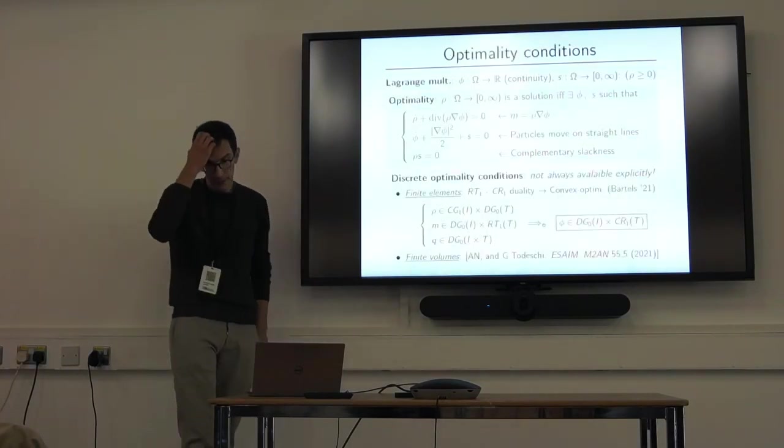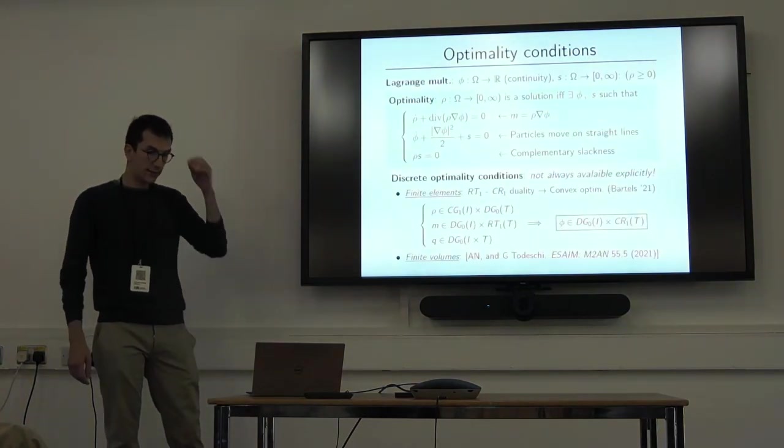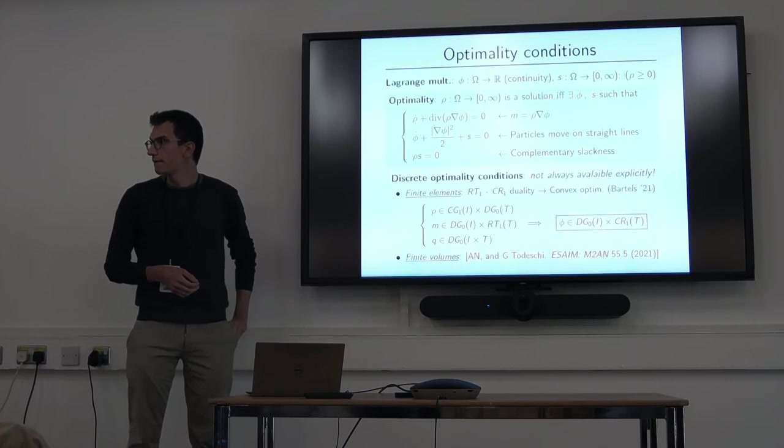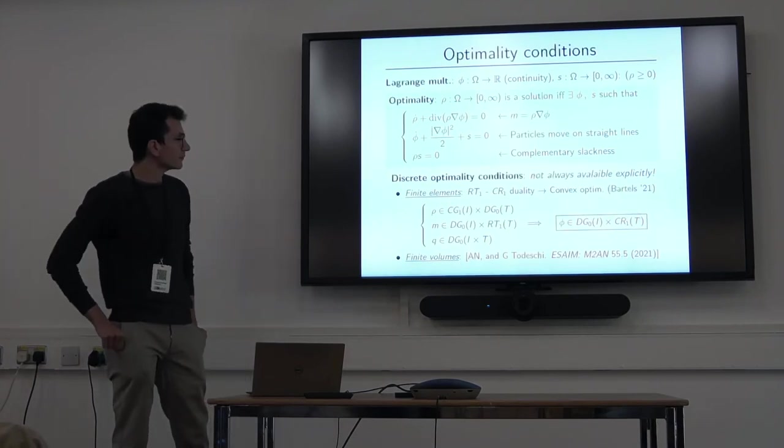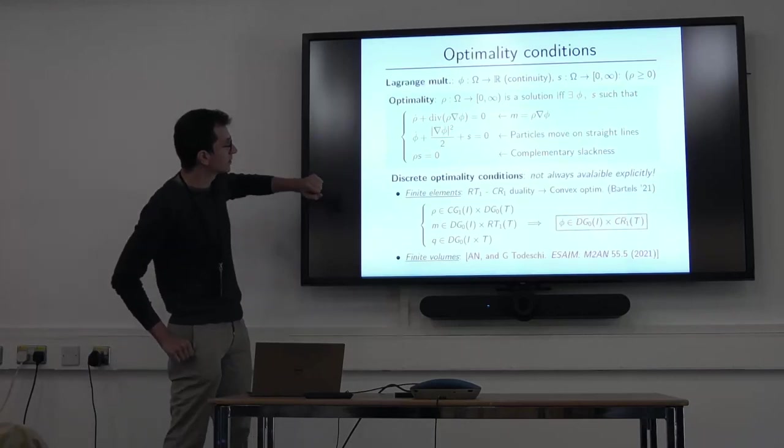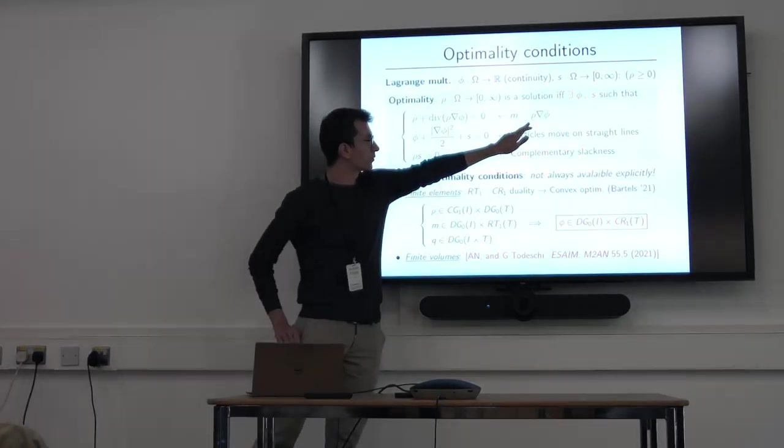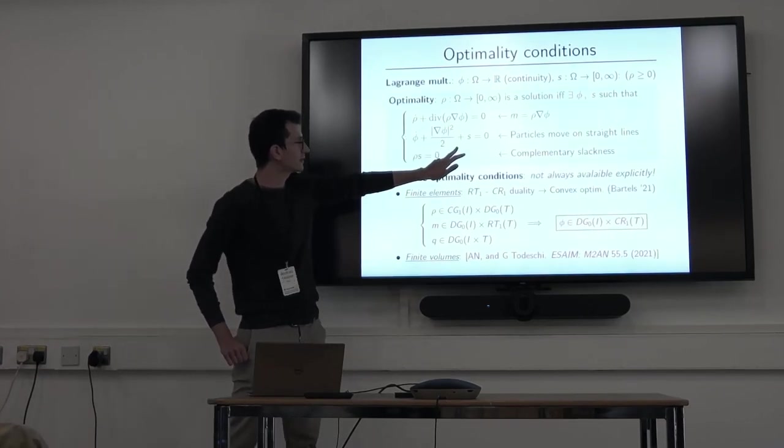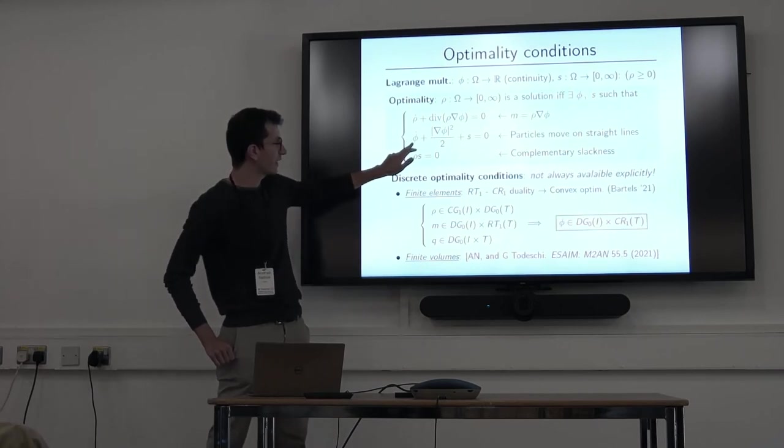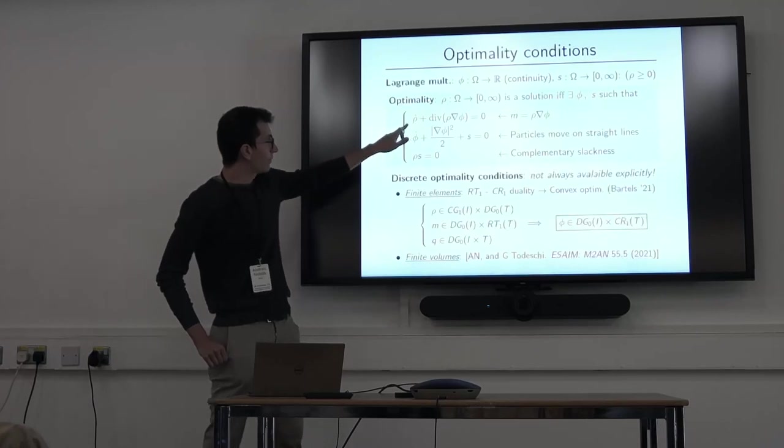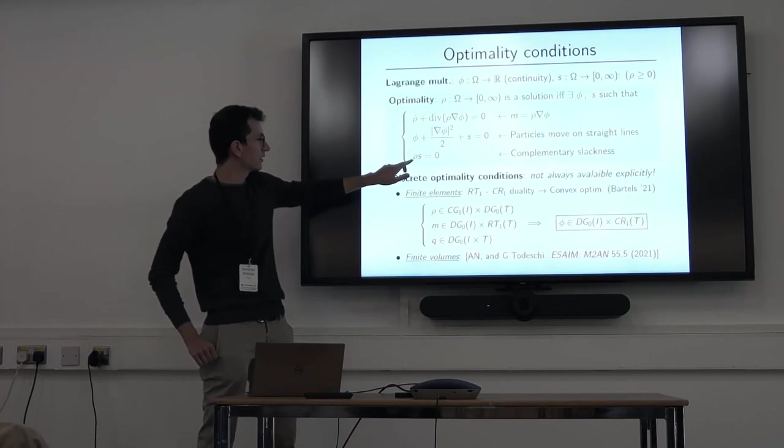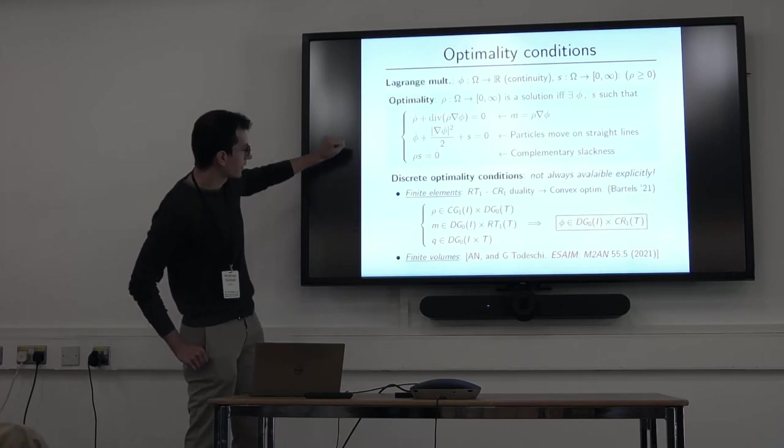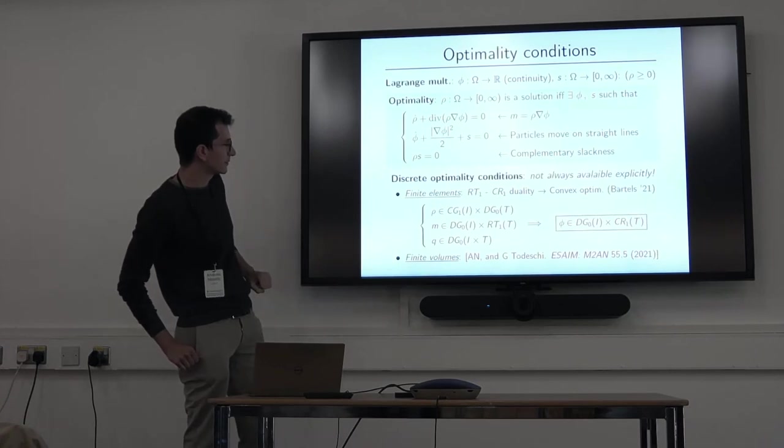And so the other approach that I wanted to talk about is the Newton type of methods. And these rely on writing the optimality conditions to this problem. So you write the optimality conditions and they look like this. So essentially what happens is that your momentum is gonna be rho times the gradient of some function, in the optimal setting. And this function is what drives the particle, satisfies an Hamilton-Jacobi equation that looks like this, which says effectively that the particle should travel on straight lines. And the positivity of the density is incorporated by this constraint here. So this S variable, we should have a sign than say. But you have this sort of system here.